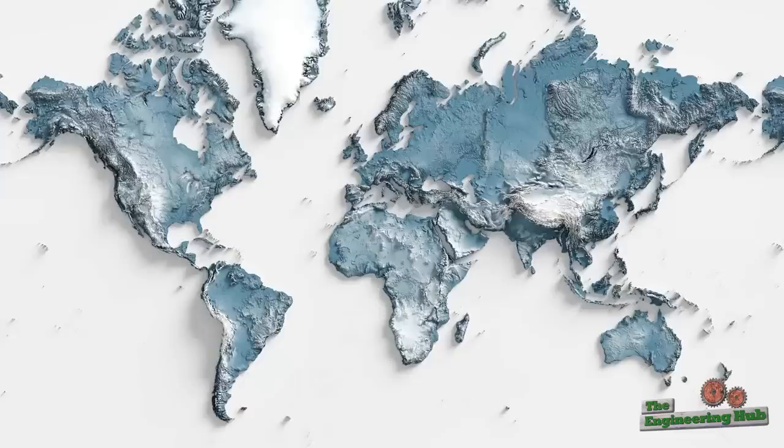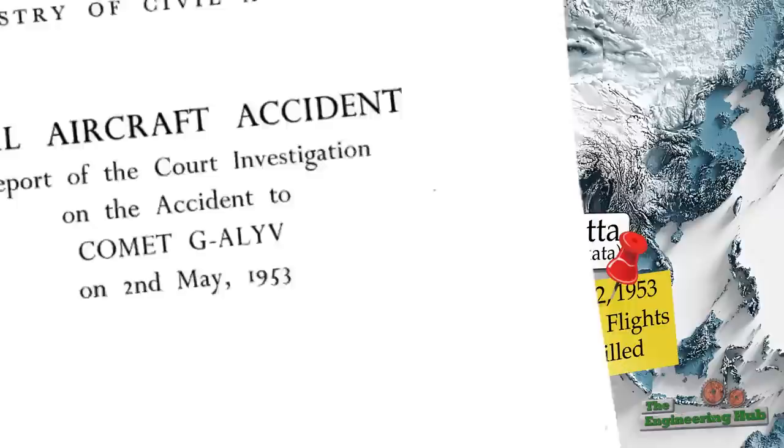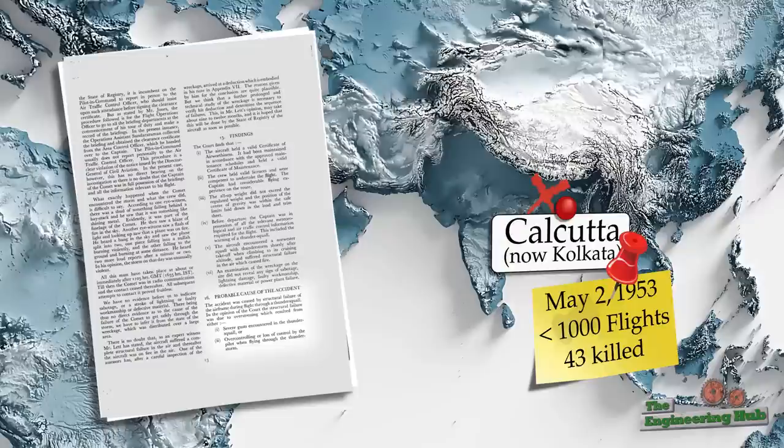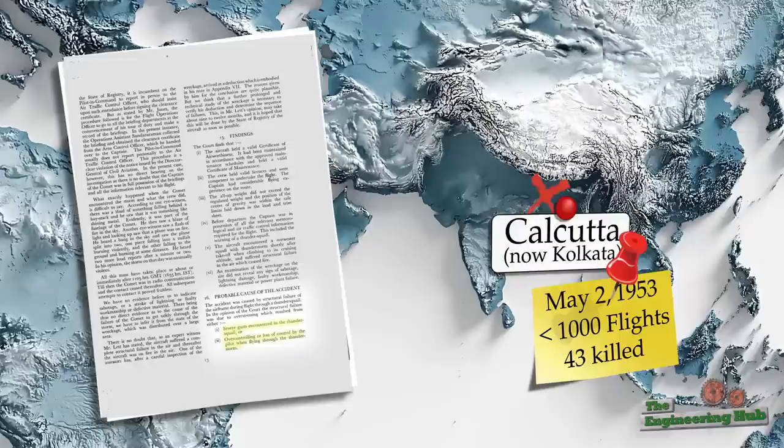On May 2nd, 1953, exactly one year after the first commercial flight, a de Havilland Comet disintegrated in mid-air soon after takeoff from the airport in Kolkata, India. The investigation concluded that the reason for the failure were the higher than usual loads imposed on the aircraft due to a tropical storm that was ravaging the area at the time. Alternatively, a pilot error was also listed as a possible cause for the crash. No one questioned the structural integrity of the plane itself.